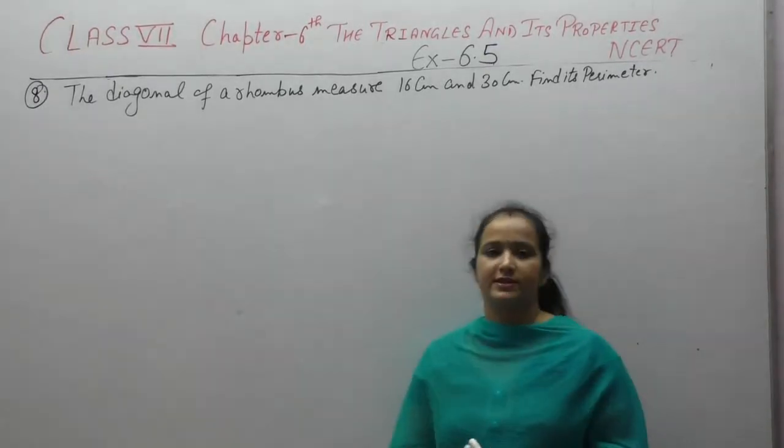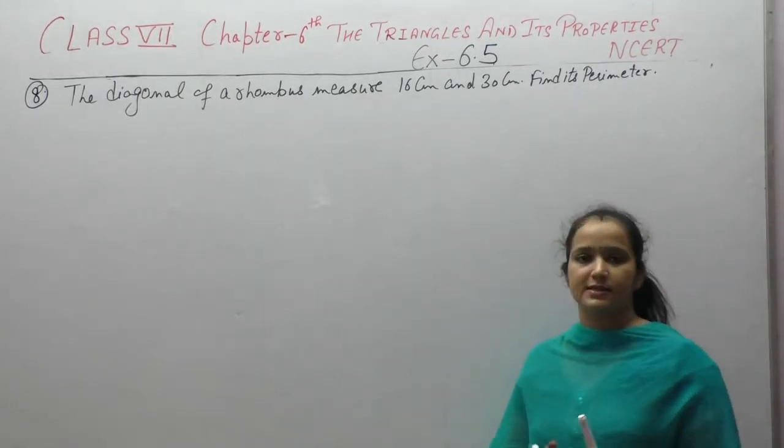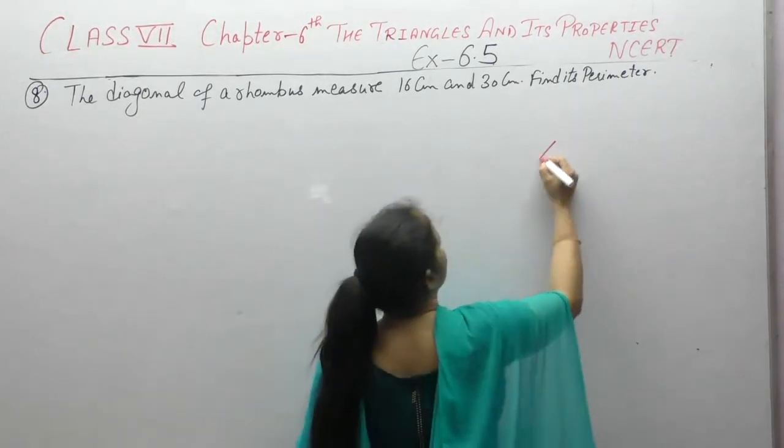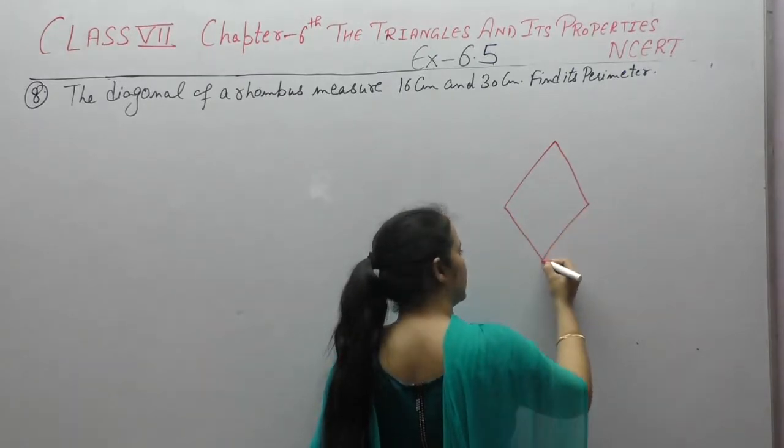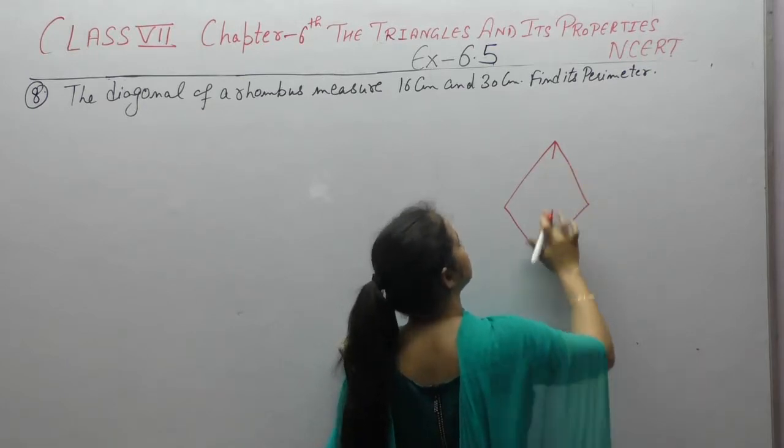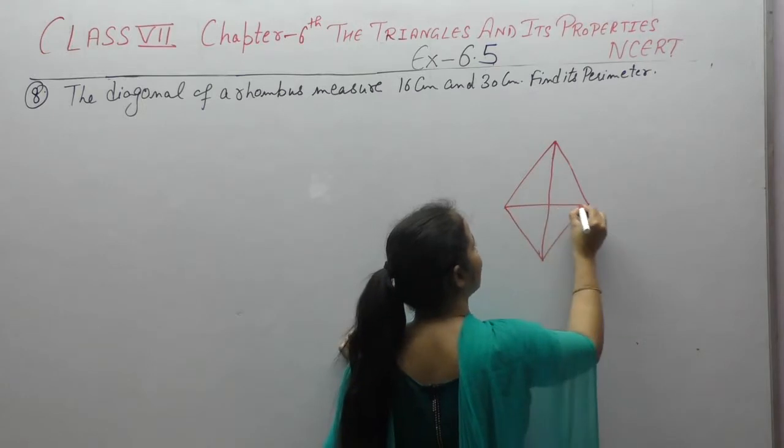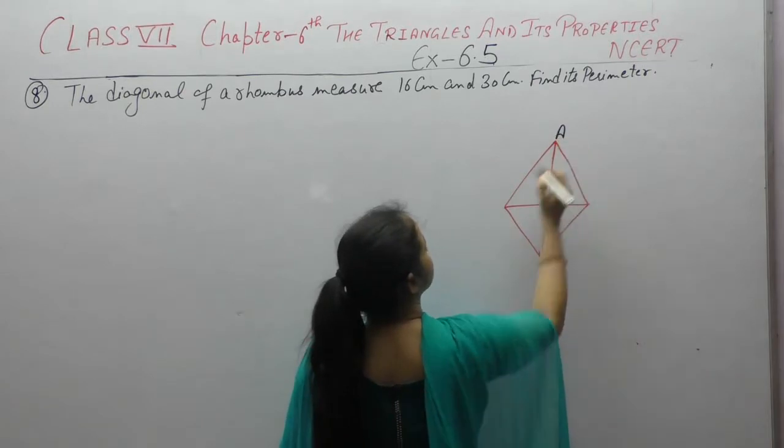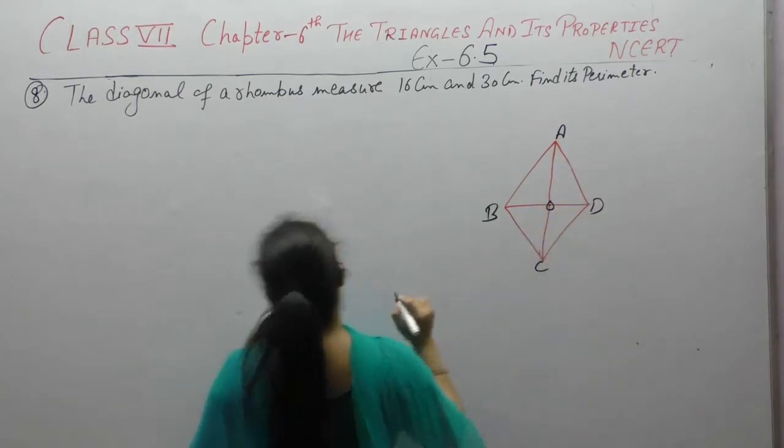Now next question of exercise 6.5: the diagonal of a rhombus measures 16 cm and 30 cm, find its perimeter. We note that the rhombus has four sides are equal and the diagonals bisect. All the four sides of rhombus are equal and diagonals bisect each other. If this is ABCD rhombus, the diagonals bisect each other at point O.